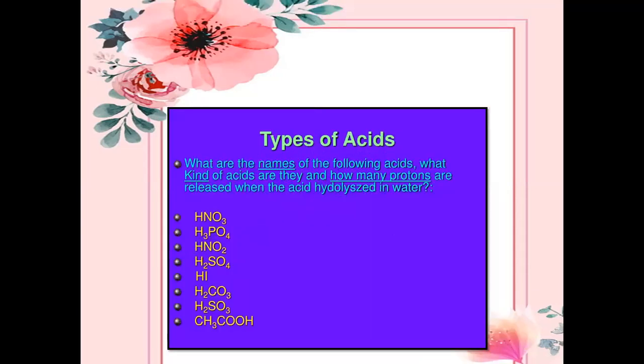Now we review the formulas and names of acids and determine how many protons are released when an acid is hydrolyzed in water. You will take these names and identify whether each acid is monoprotic, diprotic, or tetraprotic. For example, HNO3 has one hydrogen, so it is monoprotic. HNO2 also has one hydrogen. You can look at the formula and count the hydrogens to classify each acid.